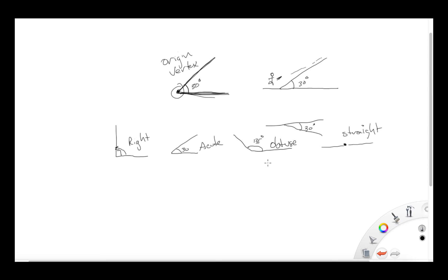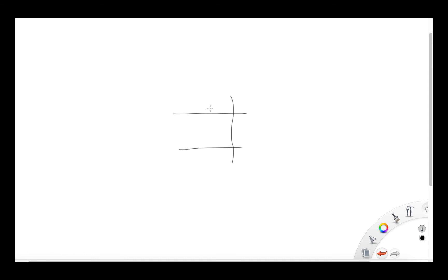In example three, it asks what is parallel to line AB. Line AB runs horizontally, and the parallel line below it is CD, so the answer is line CD. For part B, which line is perpendicular? The answer is line BD, which also has arrows on both ends going indefinitely. All the other questions on the page are very similar to these.